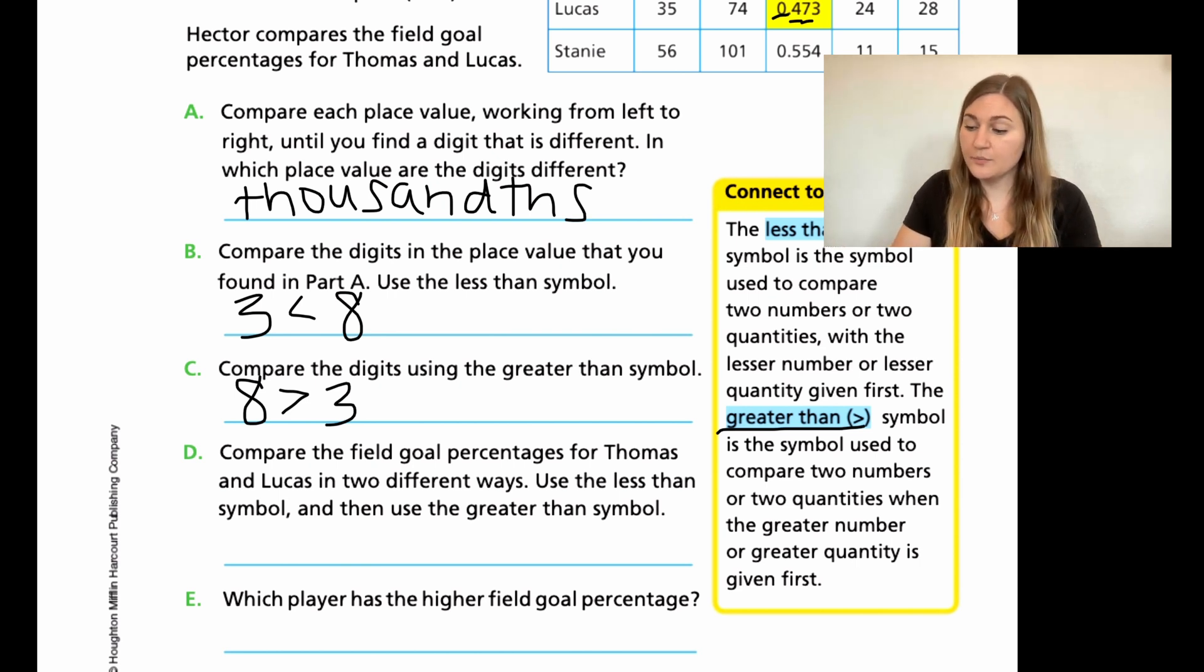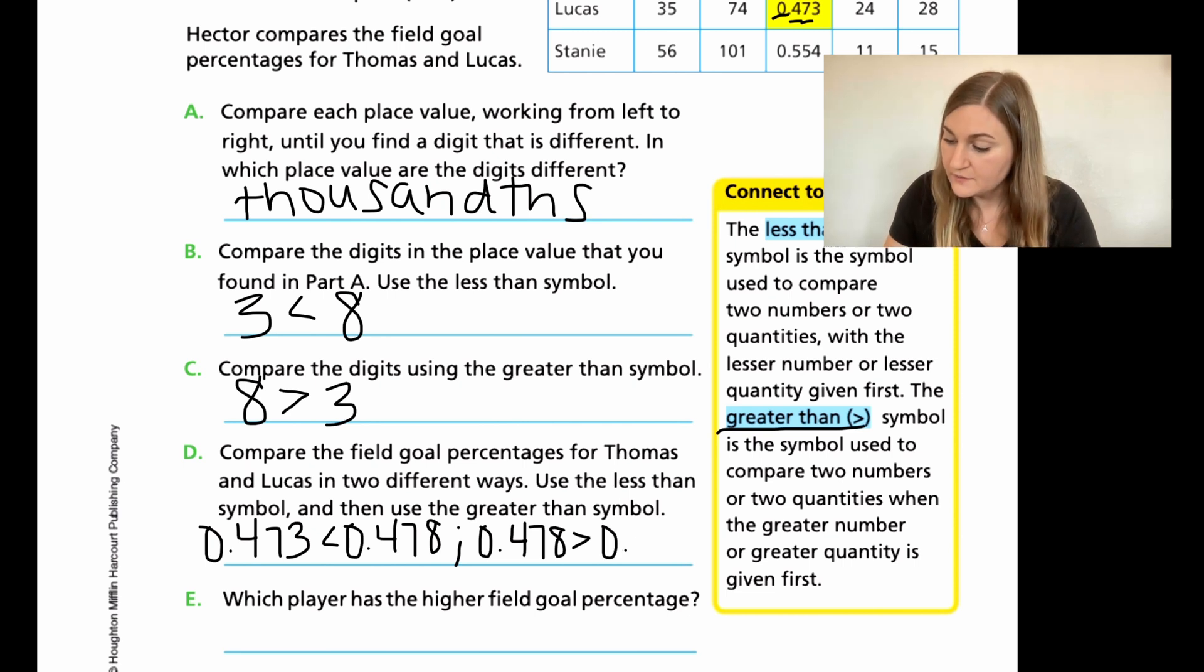And then for D, compare the field goal percentages for Thomas and Lucas in two different ways. Use the less than symbol and use the greater than symbol. So I know that the three is smaller so that when I use the less than symbol, Lucas's number has to come first. So I'm going to write 0.473 and that's going to be the less than symbol. And then I'm going to write Thomas's number, which is 0.478. And I needed to do it the other way too with the greater than. So then I'm going to start out with Thomas's number because it is greater than. So 0.478. And then that one's going to be the greater than. And then Lucas's number, which is 0.473. Just showing the contrast between the two different ways that you can do it. And then for E, which player has the highest field goal percentage? We know that that is going to be Thomas because his number is larger with the eight.